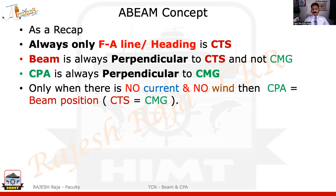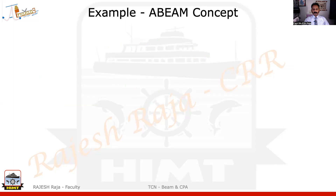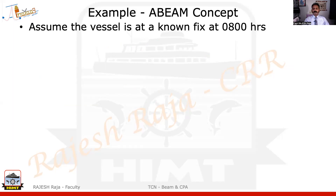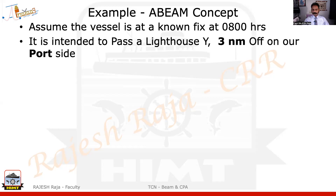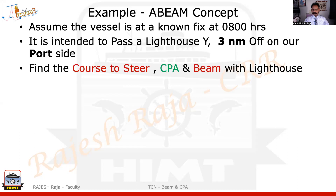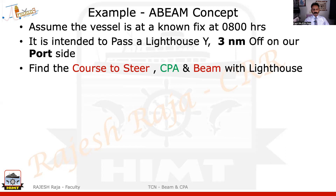You can have a question like this, but it's slightly rare — because there's no point giving both of them the same, so they will try to give you some forces. I'm going to take a straightforward example very similar to what we did in the last module. I'm giving you an initial fix of a vessel. Again, just like last time, I have a lighthouse Yankee and the intention is to pass three miles off, keeping Yankee on my port side. I'm asking: what is the course to steer, CPA, and beam with the lighthouse?